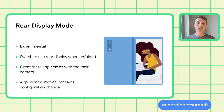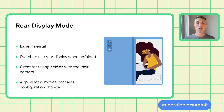We're also experimenting with other ways of interacting with multi-display devices. One exciting example is rear display mode, which allows using the high quality primary camera for selfies while showing the preview when the device is unfolded. We are working on a new set of APIs to support this use case — look for it among the experimental WindowManager Jetpack APIs in the upcoming versions.